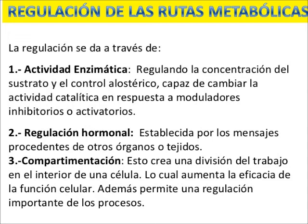Cellular compartmentalization is another form of regulation of metabolic routes. To summarize the four types: kinetic control according to substrate availability, allosteric regulation, hormonal regulation or by growth factors, and cellular compartmentalization. Compartmentalization consists in the metabolization of a same nutrient through anabolic and catabolic routes that occur in different cellular compartments. For example, the catabolism of fatty acids occurs mainly in the mitochondria, while the synthesis of fatty acids occurs in the cytoplasm. Both are deeply interconnected, but we will see this in greater depth later.